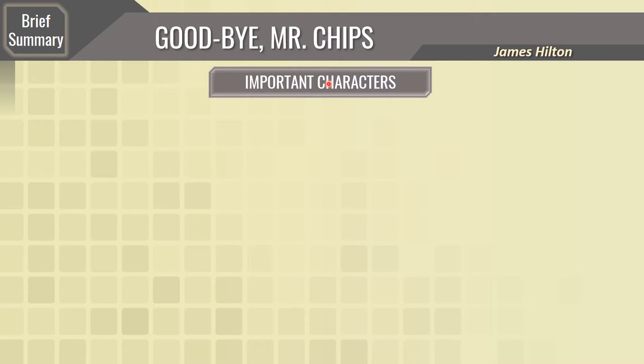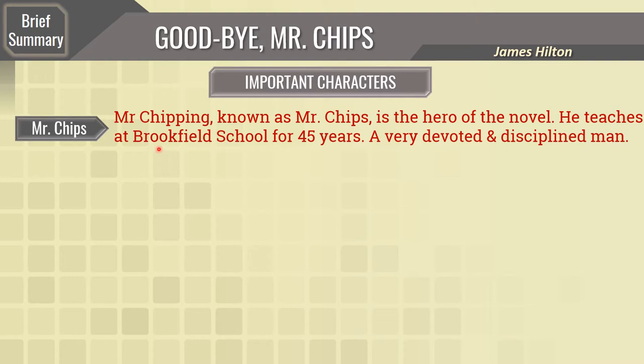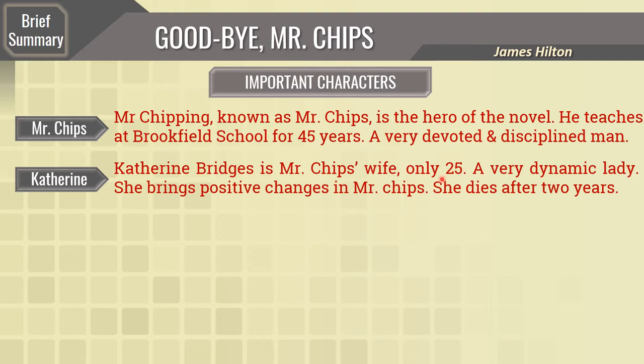Now dear students, let's discuss the important characters of Goodbye Mr. Chips. First of all, Mr. Chips himself. Mr. Chipping, known as Mr. Chips, is the hero of the novel. He teaches at Brookfield School for 45 years — a very devoted and disciplined personality. The next important character is Catherine. Catherine Bridges is Mr. Chips' wife. She is only 25 years of age when they get married. She is a very dynamic lady who brings positive changes in Mr. Chips. But unfortunately, she dies just after 2 years of their marriage in childbirth, along with their infant son.